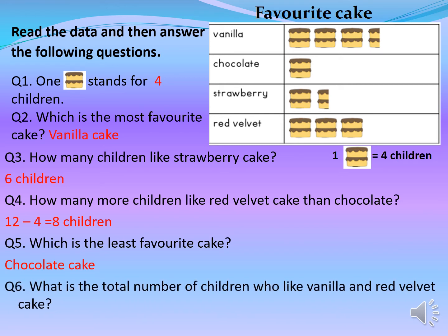What is the total number of children who like vanilla and red velvet cake? For vanilla, there are three complete cakes and one half cake: three times four equals twelve, plus half of four which is two, so twelve plus two equals fourteen. Red velvet has three cakes: three times four equals twelve. Adding fourteen plus twelve equals twenty-six children. This shows how important the key is.